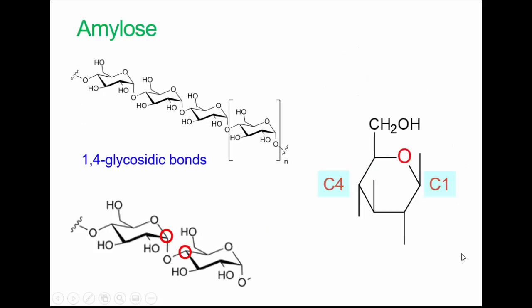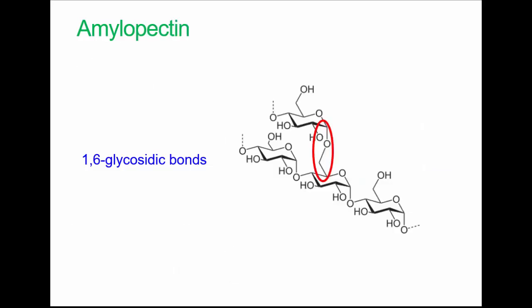Amylose is linked by 1-4 glycosidic bonds — bonds linked by an oxygen between carbon one and carbon four of adjacent glucose residues. In terms of human metabolism, we have a particular enzyme that can break those bonds. It's an exo-enzyme, starting at the end, which is one reason we can't digest starch until it's been broken into smaller amounts — it would simply take too long for the exo-enzymes to work their way along. Amylopectin, on the other hand, is linked by 1-6 glycosidic bonds — bonds between carbon one and carbon six.